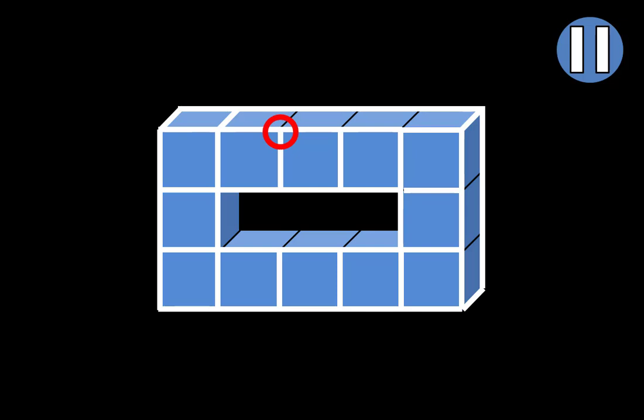Now we'll draw the rest of the diagonals on the outside. Draw a diagonal line from this corner, draw a diagonal line from this corner, another from this corner, another from this corner, another from this corner, another from this corner, and another from this corner.